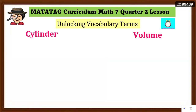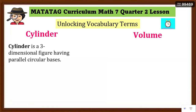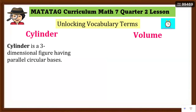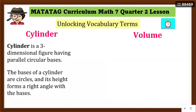Okay, let's check your answer. When we say cylinder, it is a three-dimensional figure having parallel circular bases. When we say parallel, these are two or more lines that never intersect and are the same distance apart. The bases of a cylinder are circles, and its height forms a right angle with the bases.